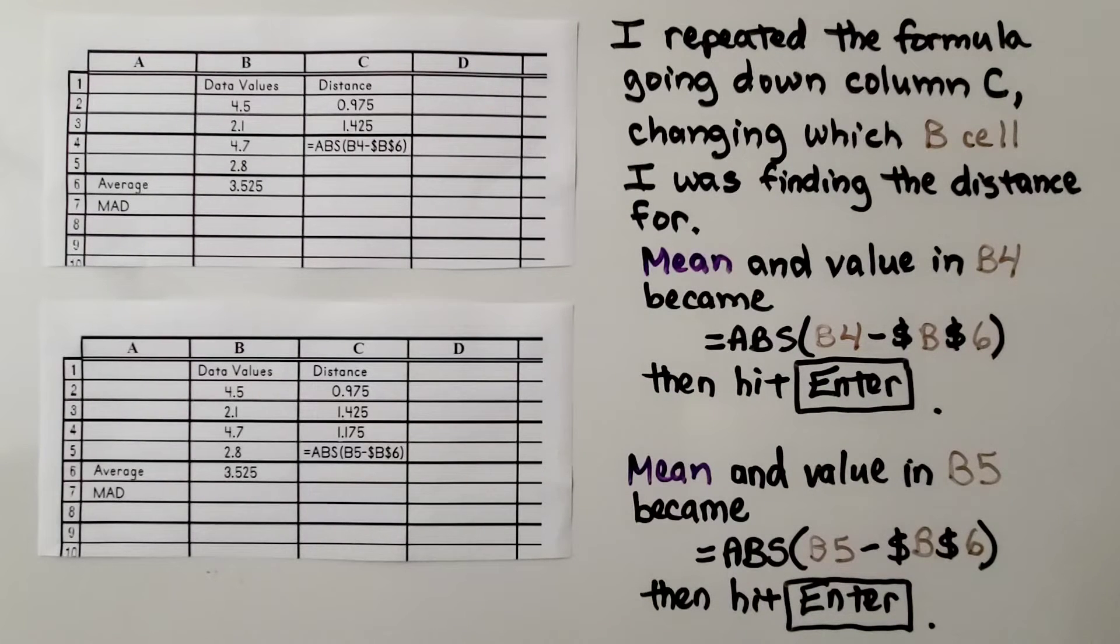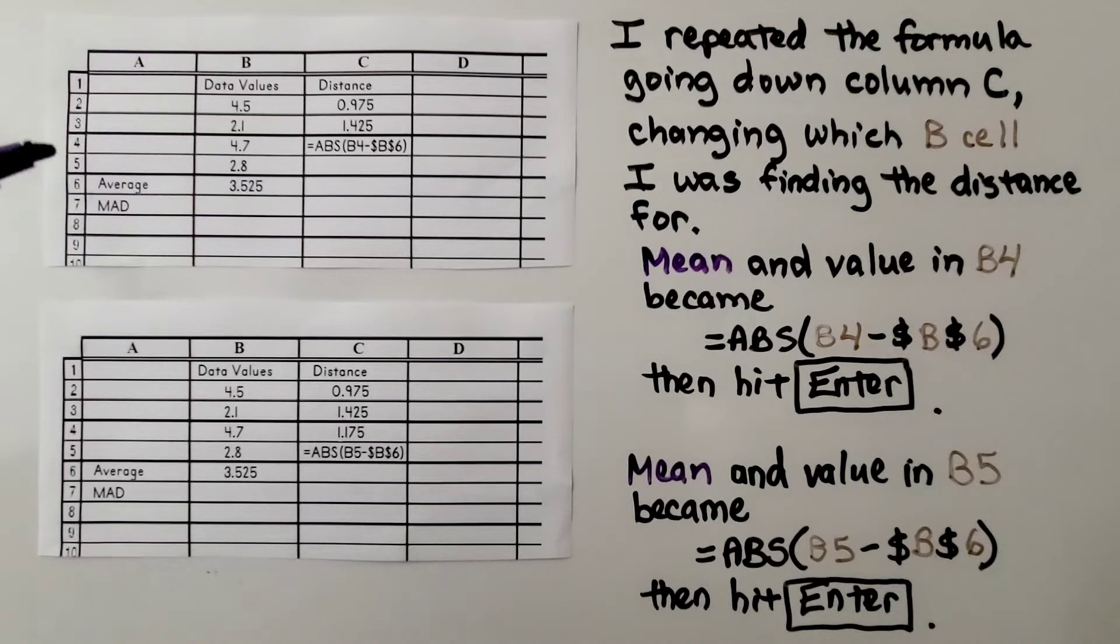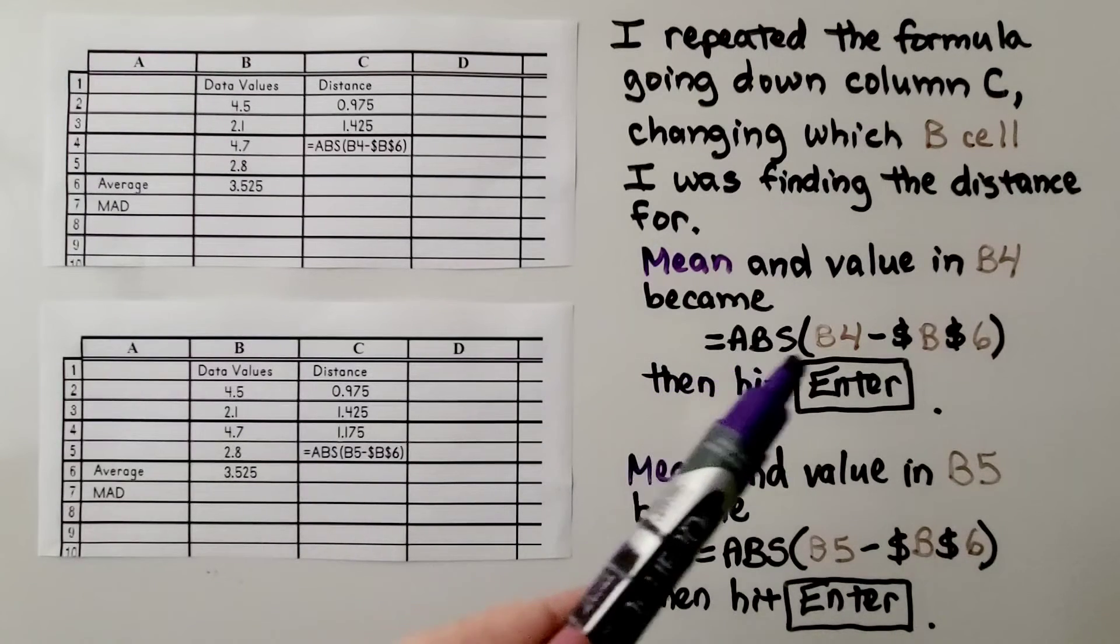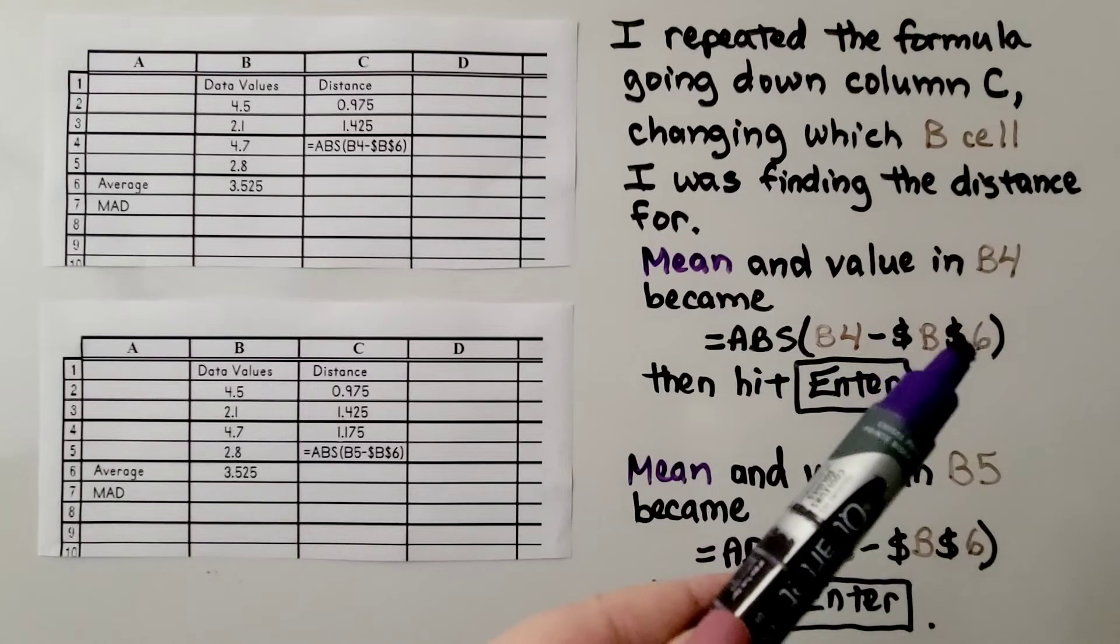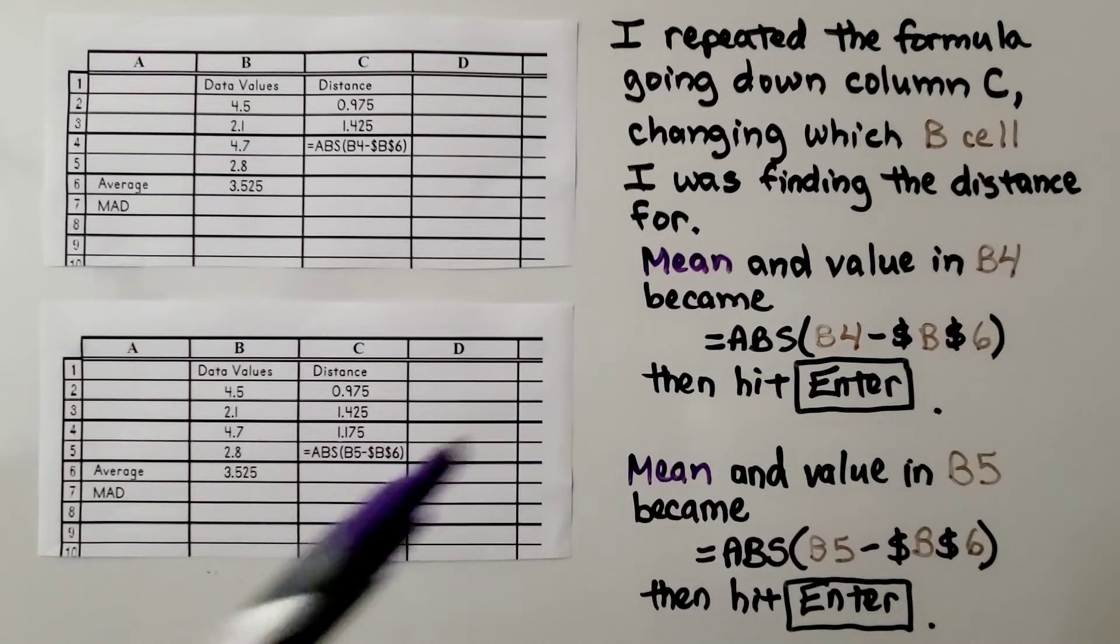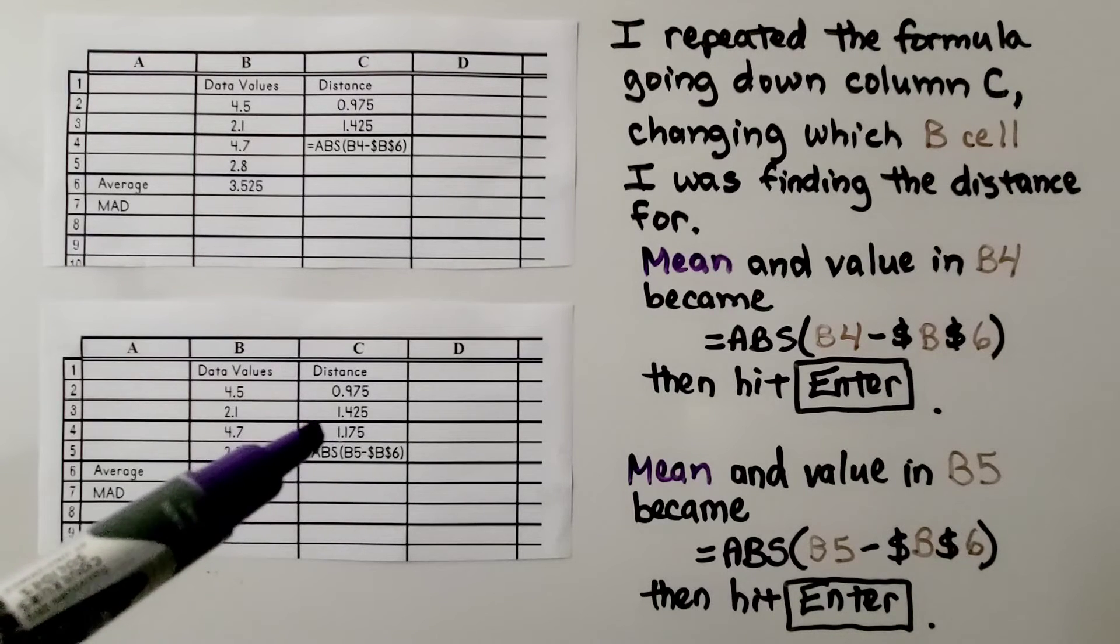And I repeated that formula going down column C, changing which B cell I was finding the distance for. So now I'm trying to find the distance for B4. So my formula has B4 here now, minus dollar sign B dollar sign 6. And then I hit enter and it gave us that distance, 1.175.